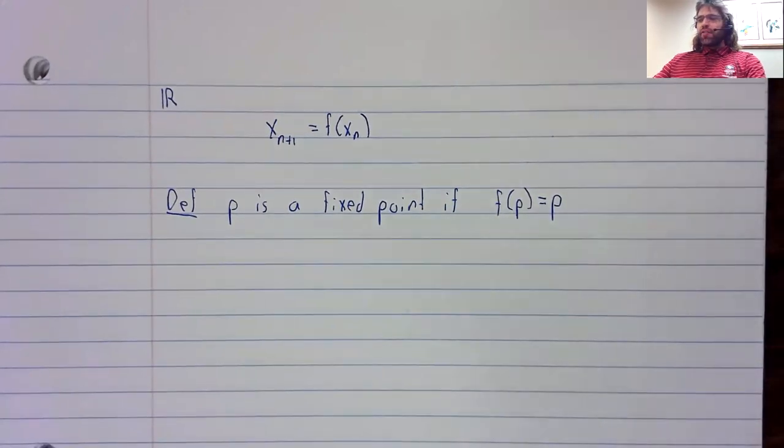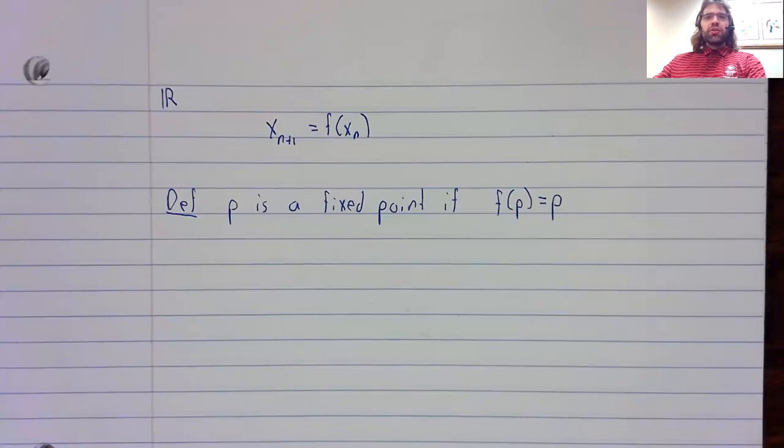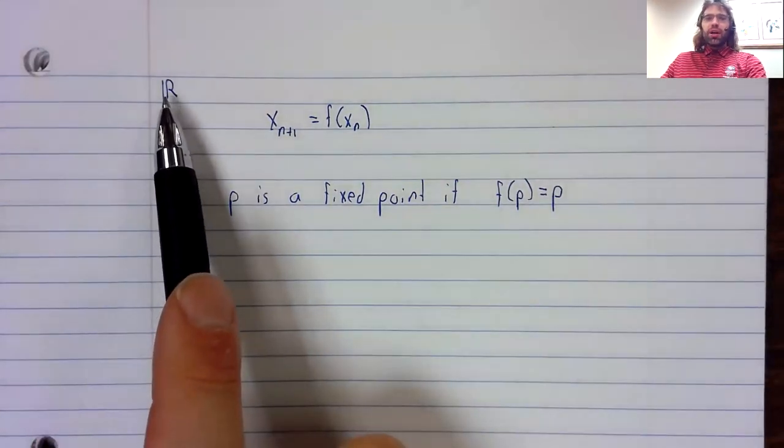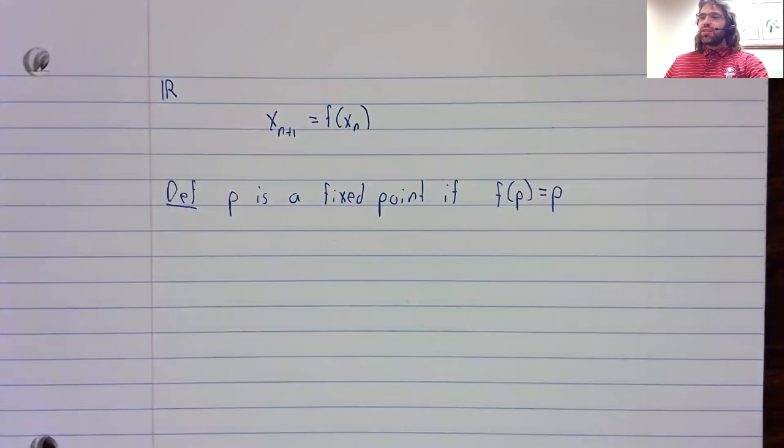A fixed point can be stable, unstable, or asymptotically stable, just like in differential equations. In this ℝ case, it's pretty simple.